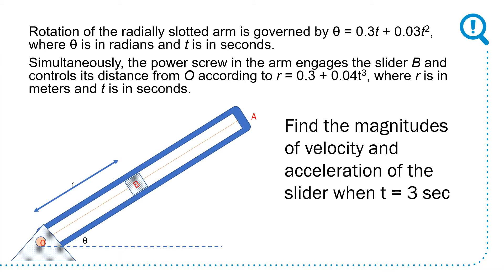The problem: rotation of a radially slotted arm is governed by theta equals 0.3t plus 0.03t², where theta is in radians and t is in seconds. Simultaneously, the power screw in the arm controls slider B's distance from O according to R equals 0.3 plus 0.04t³, where R is in meters and t is in seconds. Find the magnitude of velocity and acceleration of the slider when t equals 3 seconds.